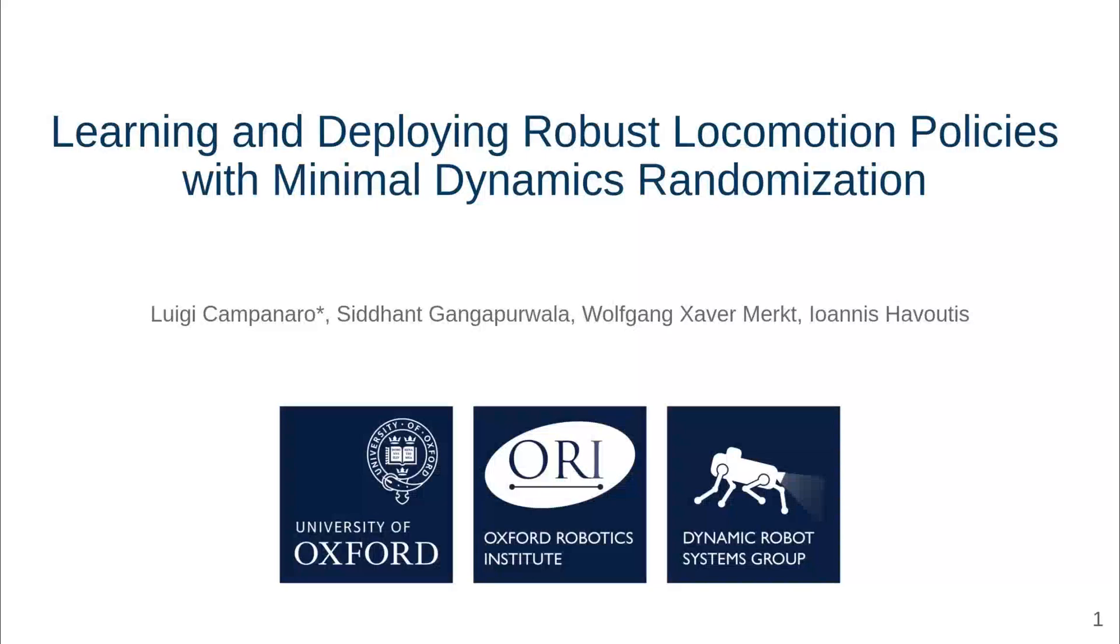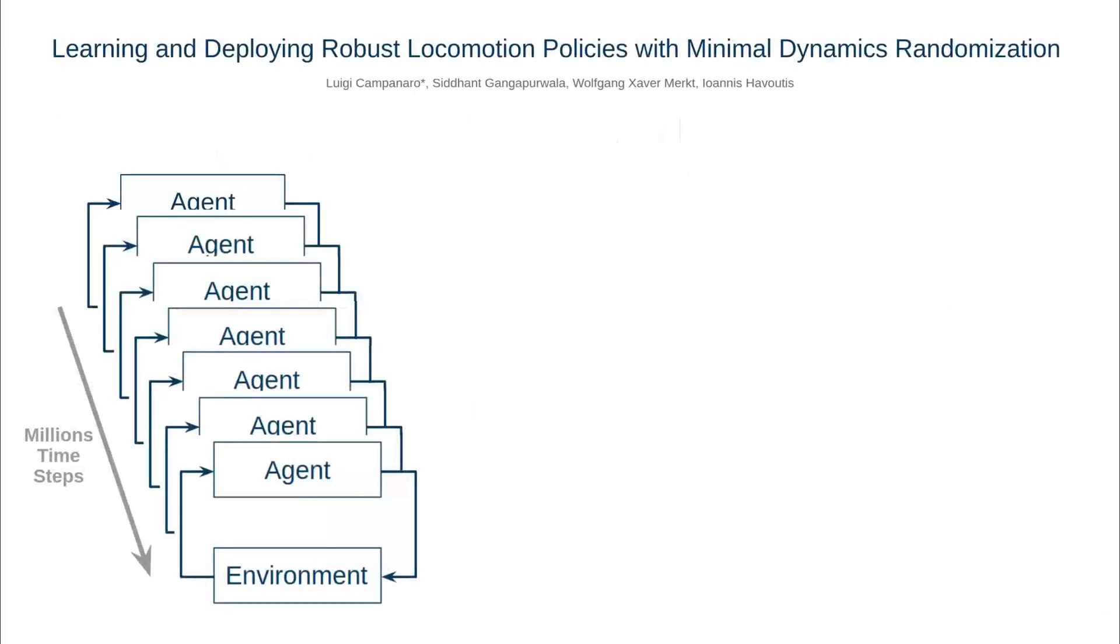This work presents a method to learn and deploy robust locomotion policies resorting to minimal domain randomization. Training of deep reinforcement learning locomotion policies requires massive amounts of data to converge to the desired behavior.